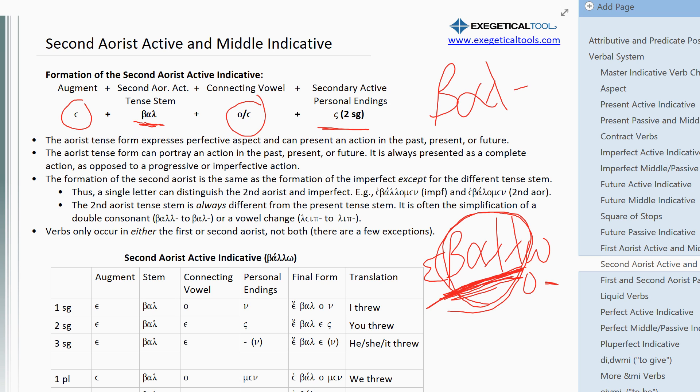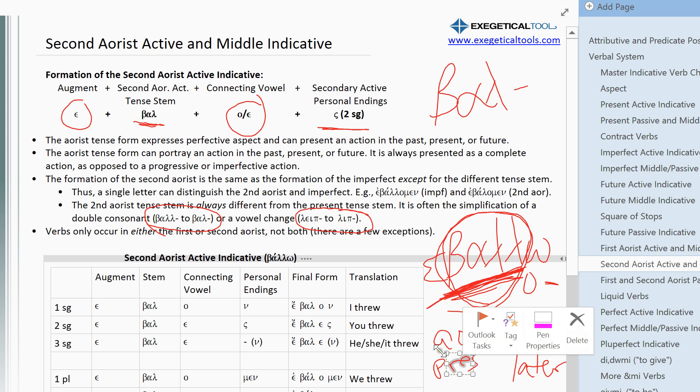It's often going to be something like the simplification of a double consonant like we have here with ballo, or it'll be a vowel change. And this one's pretty common. It'll have a different vowel in between the first and the last letters of the stem. And one thing to note is that I say it's a vowel change, but technically the aorist, the aorist tense stem came first in the language and the present tense stem came later.